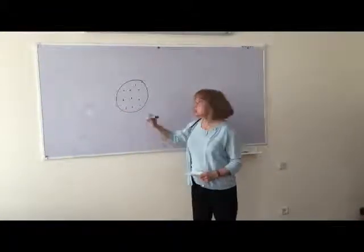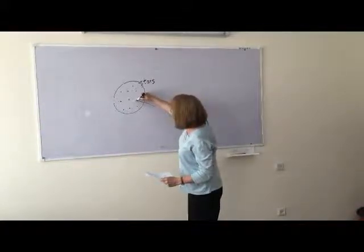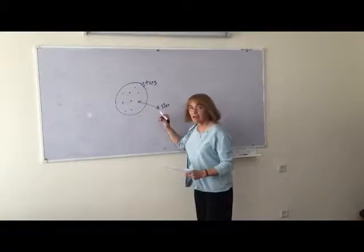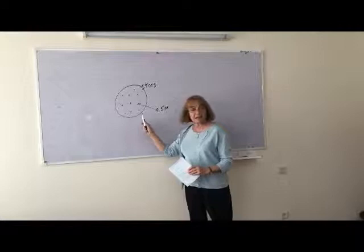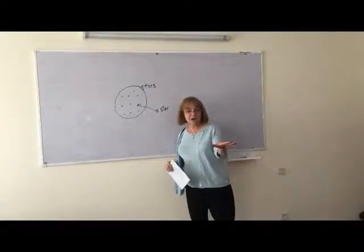Those are all stars. And if I choose one of them, I can say a star. And when you use a, it means you didn't select all of them. You took one and not the rest.